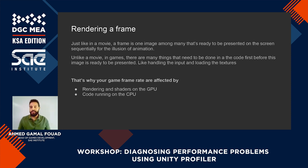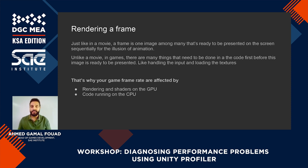This could include handling input — what happens when the player presses space or clicks the mouse button. It could also include loading data like the textures you need to draw. This is specifically why game frame rate gets heavily affected by both the CPU and the GPU. If you're trying to achieve a good frame rate, you should consider optimizing both the logic and the GPU rendering and shaders you are using.